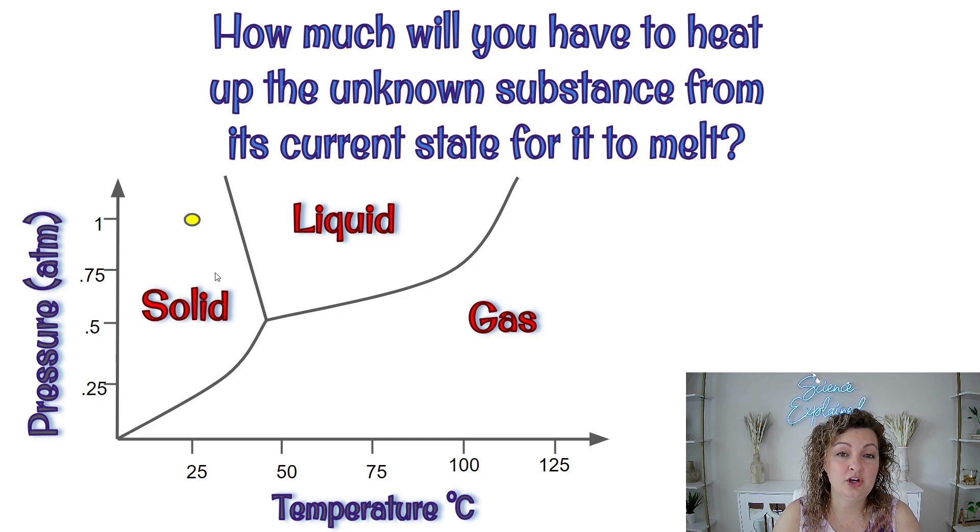It says it's in its current state. In other words, we're not going to change the pressure. The pressure is at one atmosphere. We are going to maintain that one atmosphere, but we need to know how much you have to heat it up until it melts. Well, to go from a solid and melt it, we go to a liquid. So it needs to actually touch this line in order for it to melt.